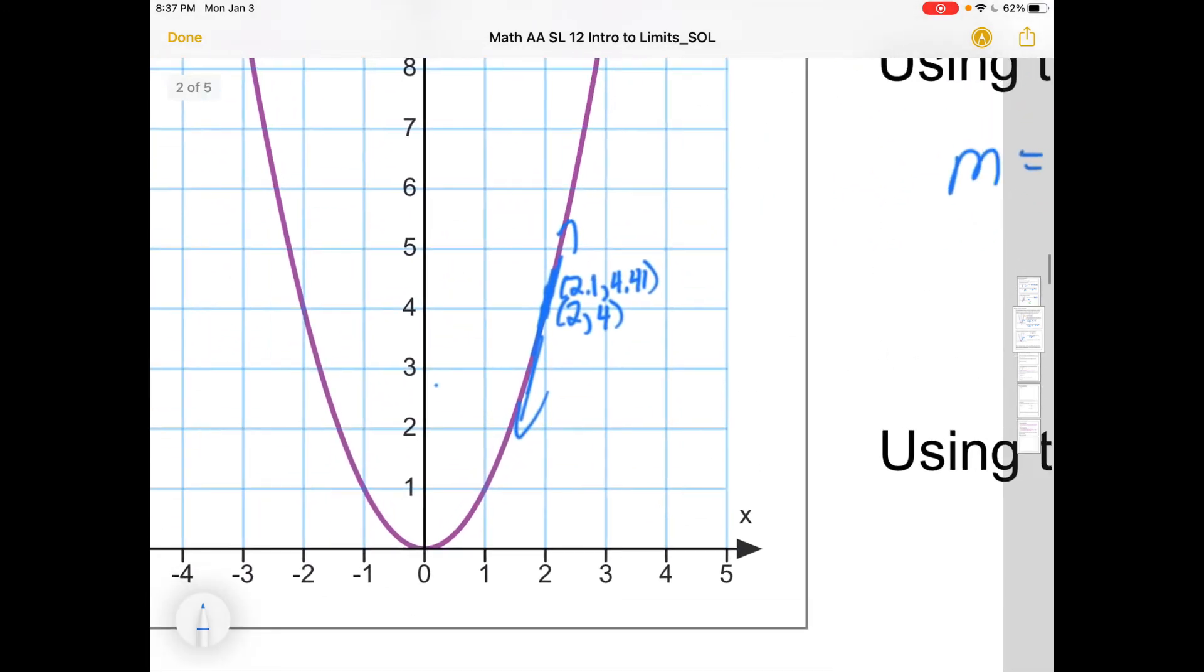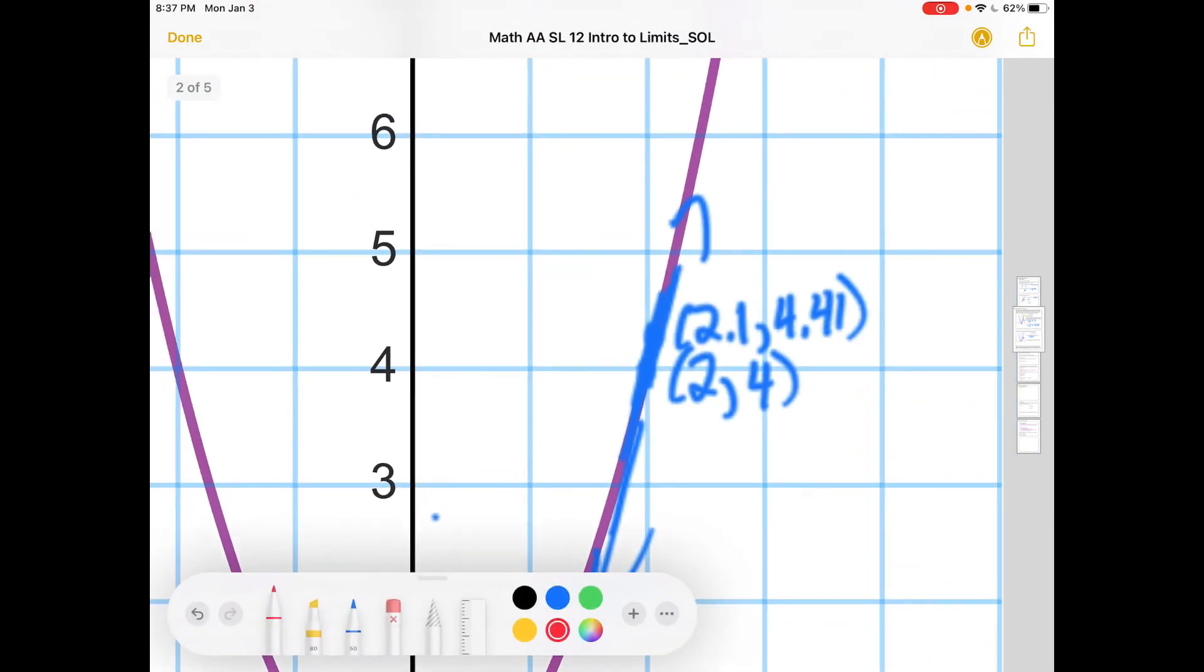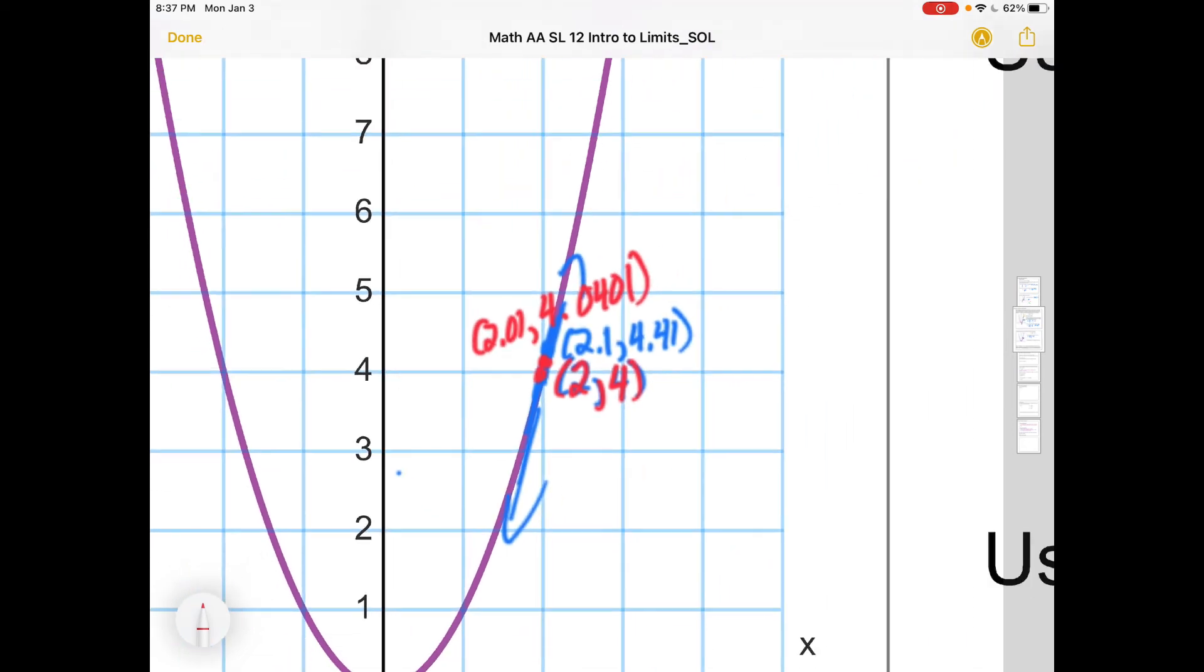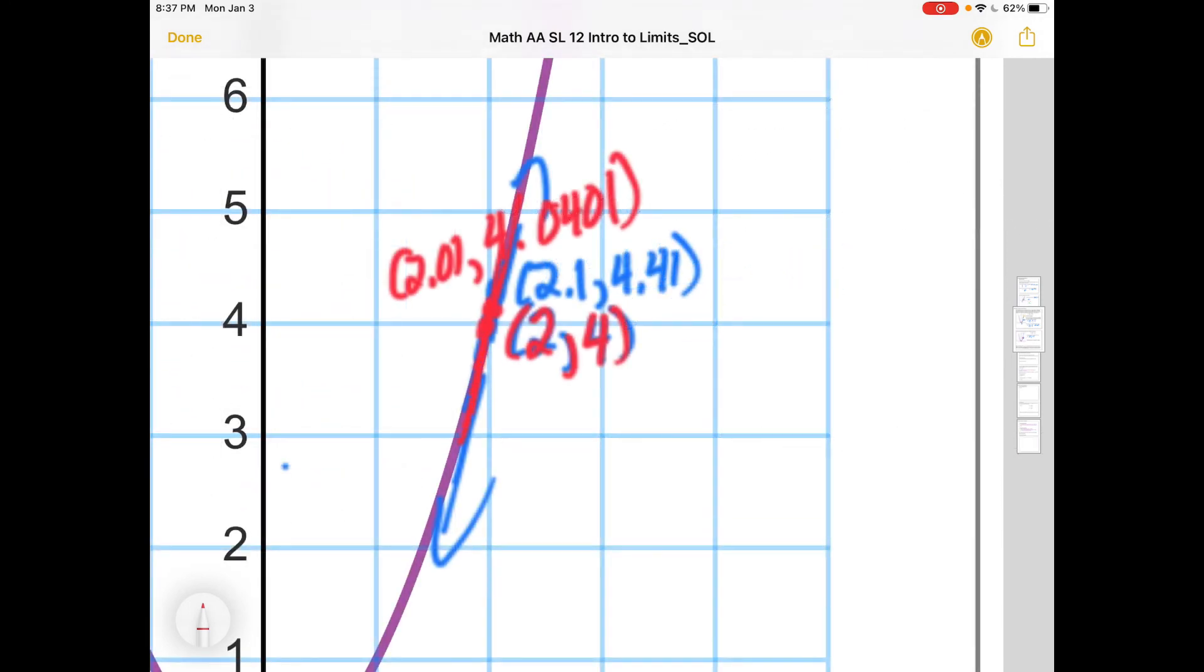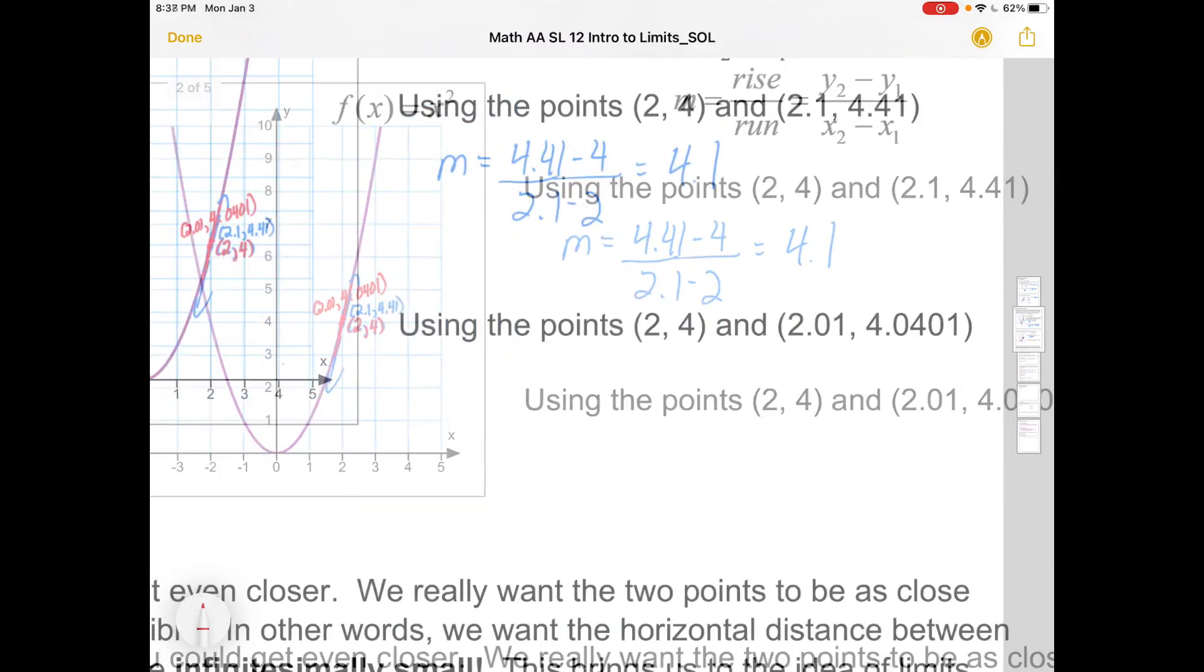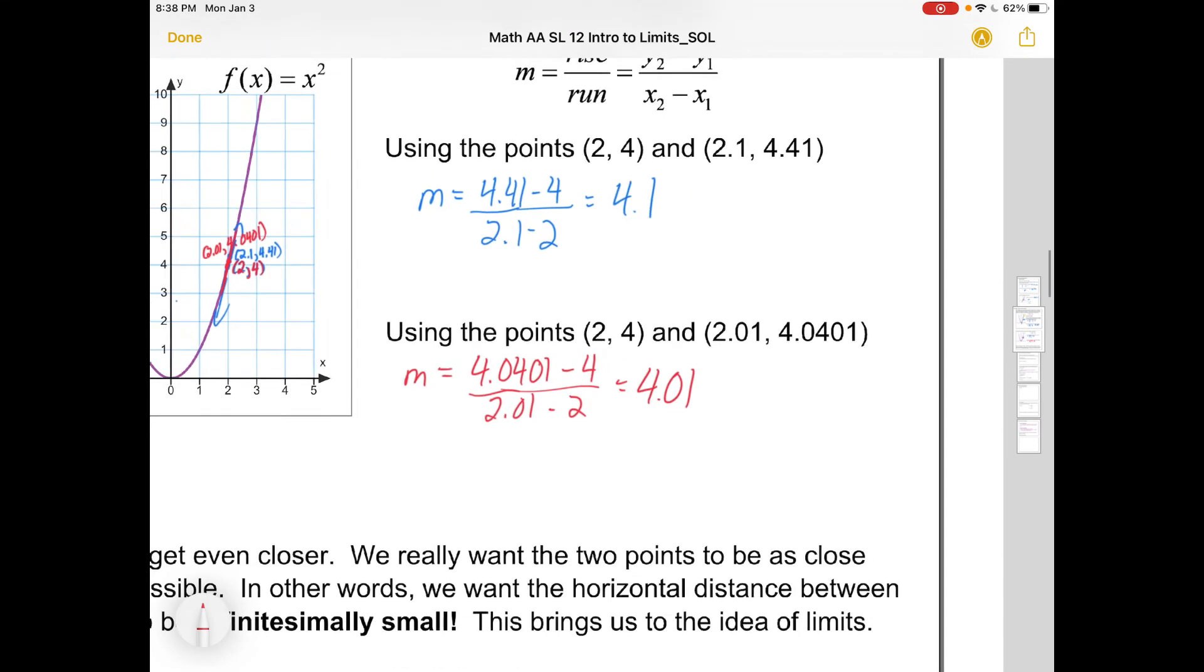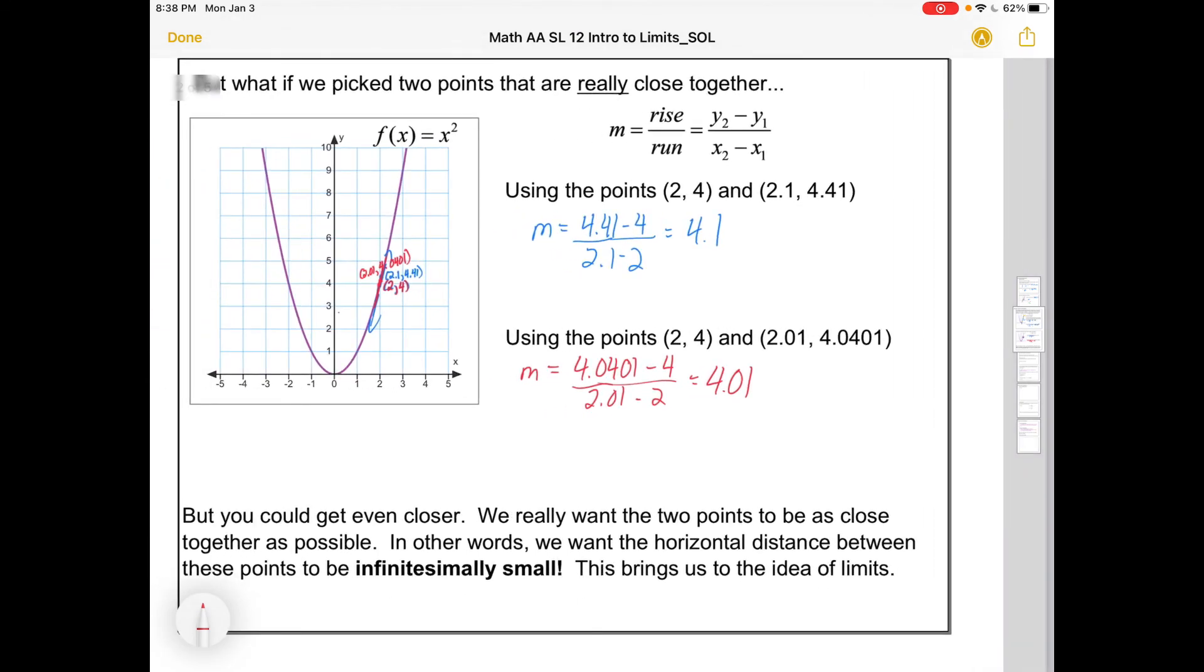What if we went even closer? Let me zoom way, way far in here. What if I picked, still 2,4 and this one just right here, I get 2.01. And the corresponding y-value would be 4.0401. Those are really close together. And draw the secant through those two points. The slope is going to be just a touch different. I can find the slope by just subbing in y2 minus y1 all over x2 minus x1. And it turns out I'll get 4.01. At this point, you might start to get suspicious. You might say, oh, well, maybe the actual tangent slope is just really close to 4. And the number that's closest to 4 is just 4.